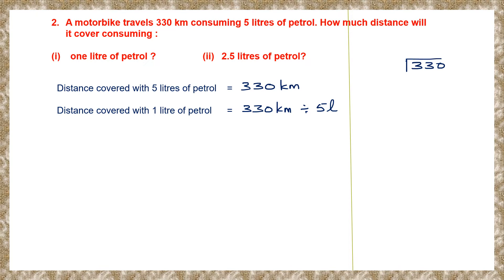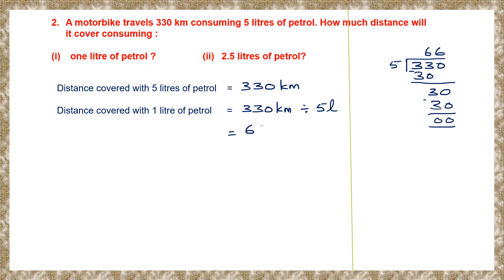330 divided by 5. We have 33. 5 sixes are 30, subtract. Bring down 3 and we have 30 again. 5 sixes are 30, subtract. So, we have found the distance that can be covered with 1 liter of petrol is 66 kilometers.